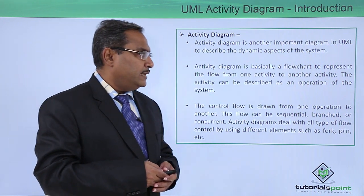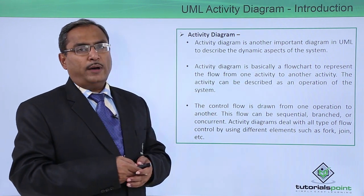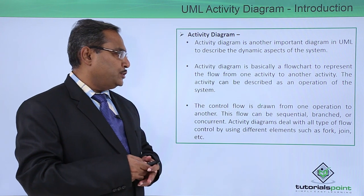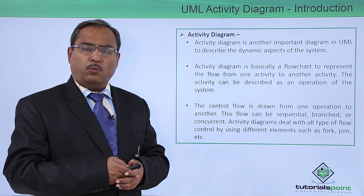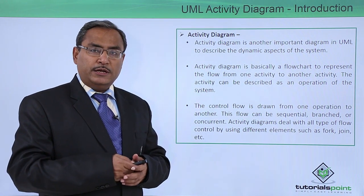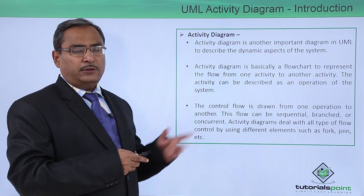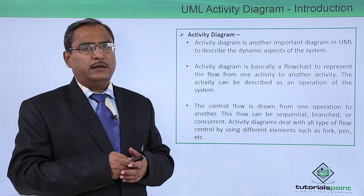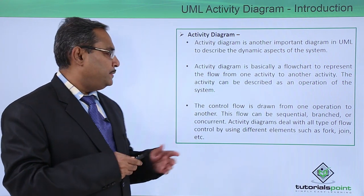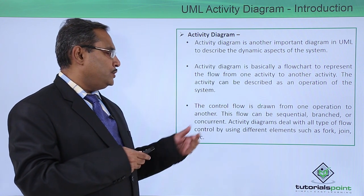Activity Diagram is basically a flowchart to represent the flow from one activity to another activity. An activity can be described as an operation of the system — one activity represents one operation of the system. This diagram is of flowchart type, where the control flow is drawn from one operation to another.